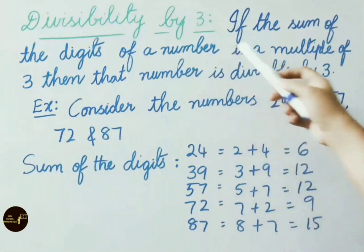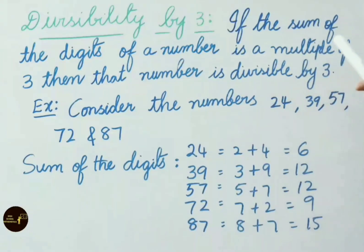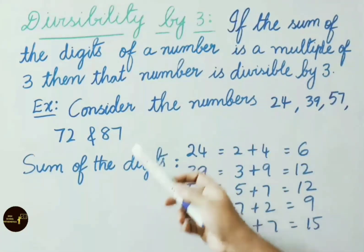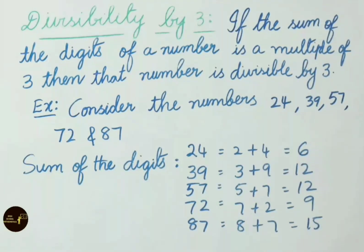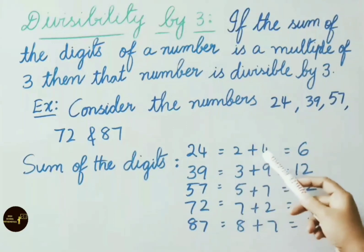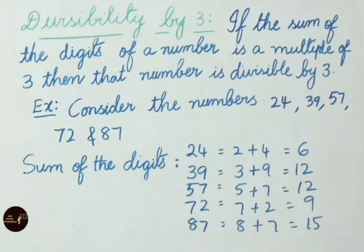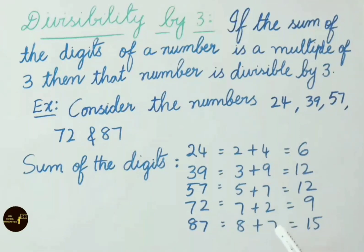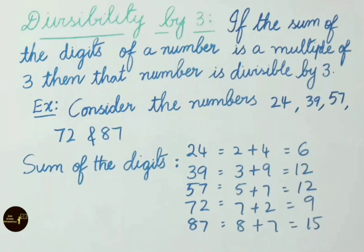Divisibility by 3: If the sum of the digits of a number is a multiple of 3, then that number is divisible by 3. Consider the numbers 24, 39, 57, 72 and 87 and find divisibility by 3. Sum of digits: 24 → 2+4=6; 39 → 3+9=12; 57 → 5+7=12; 72 → 7+2=9; 87 → 8+7=15. Here all these sums are divisible by 3.